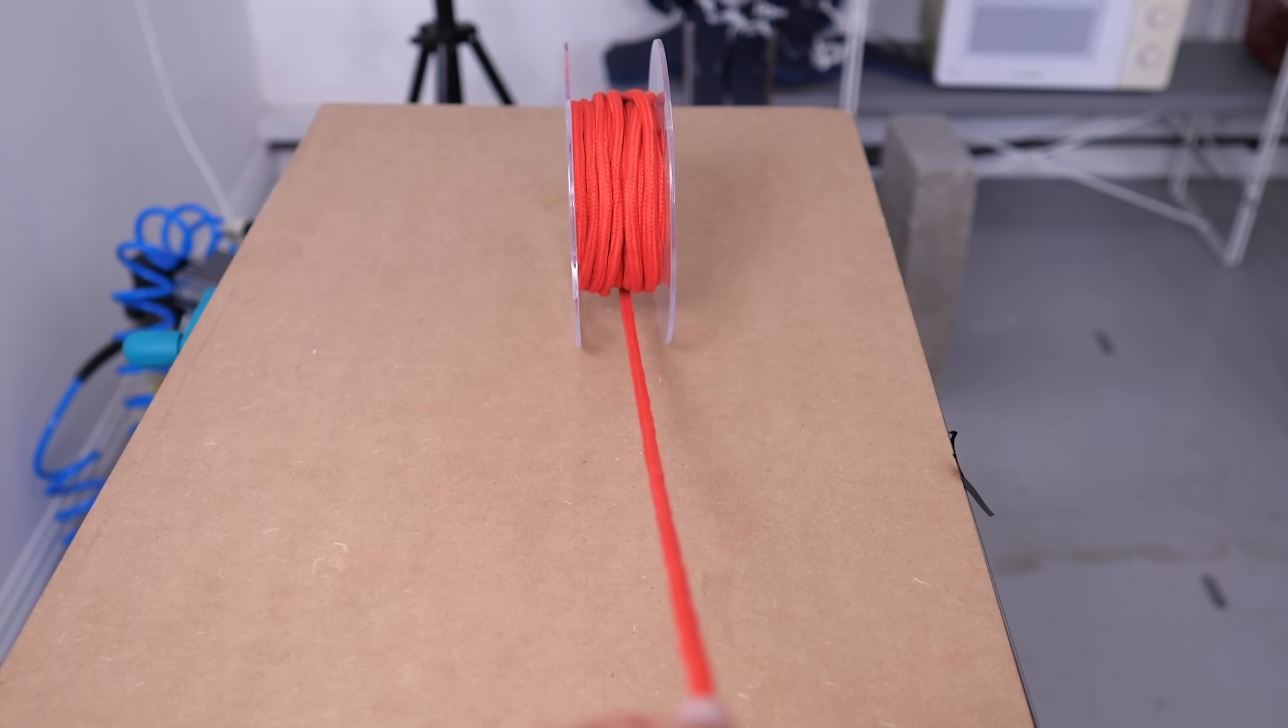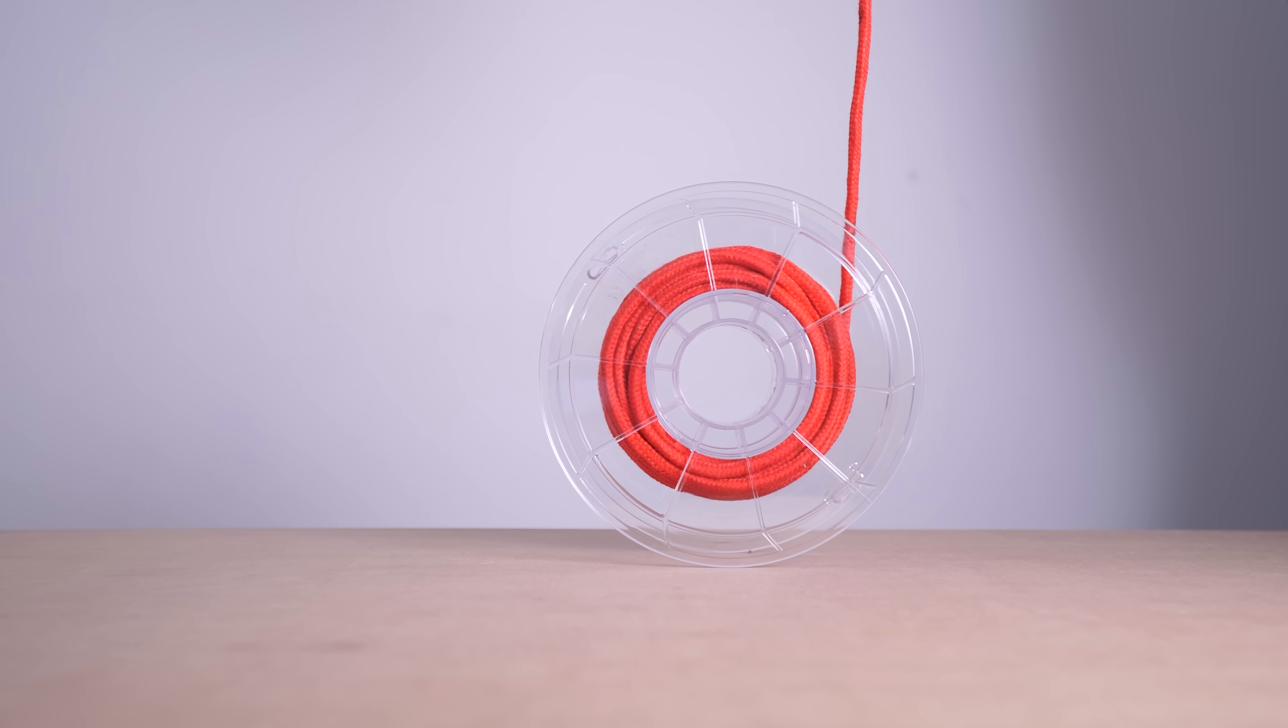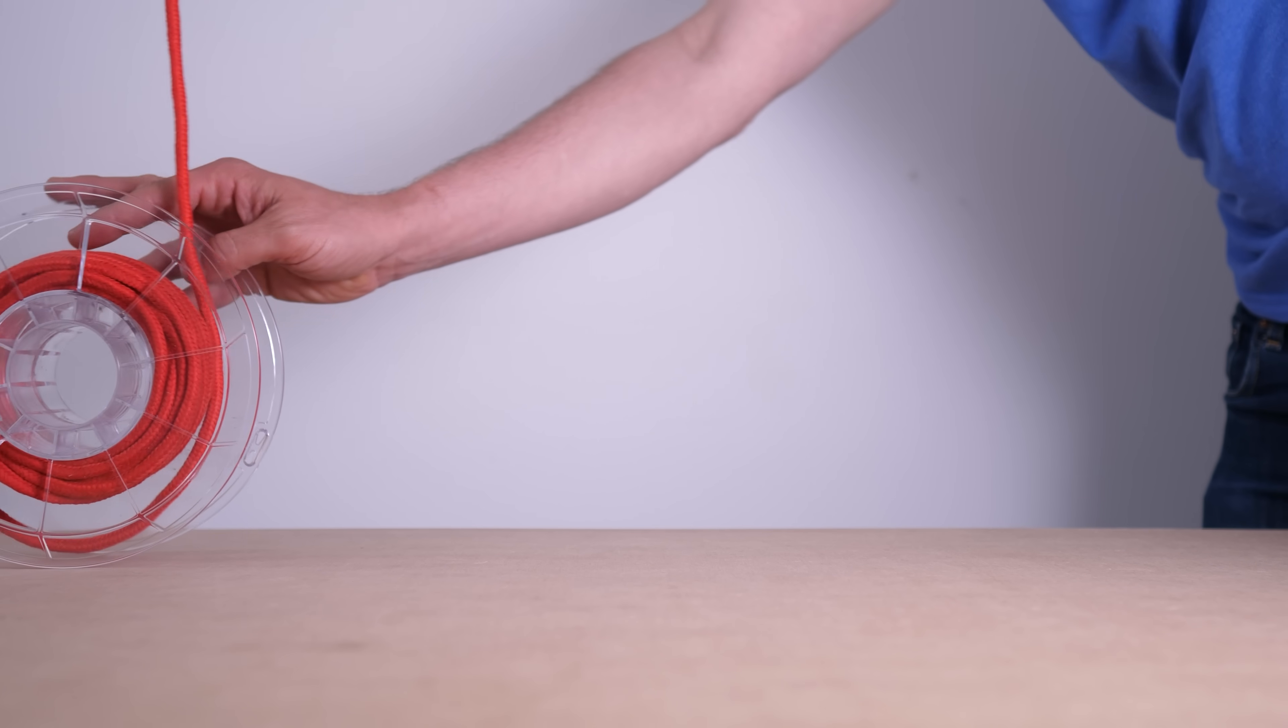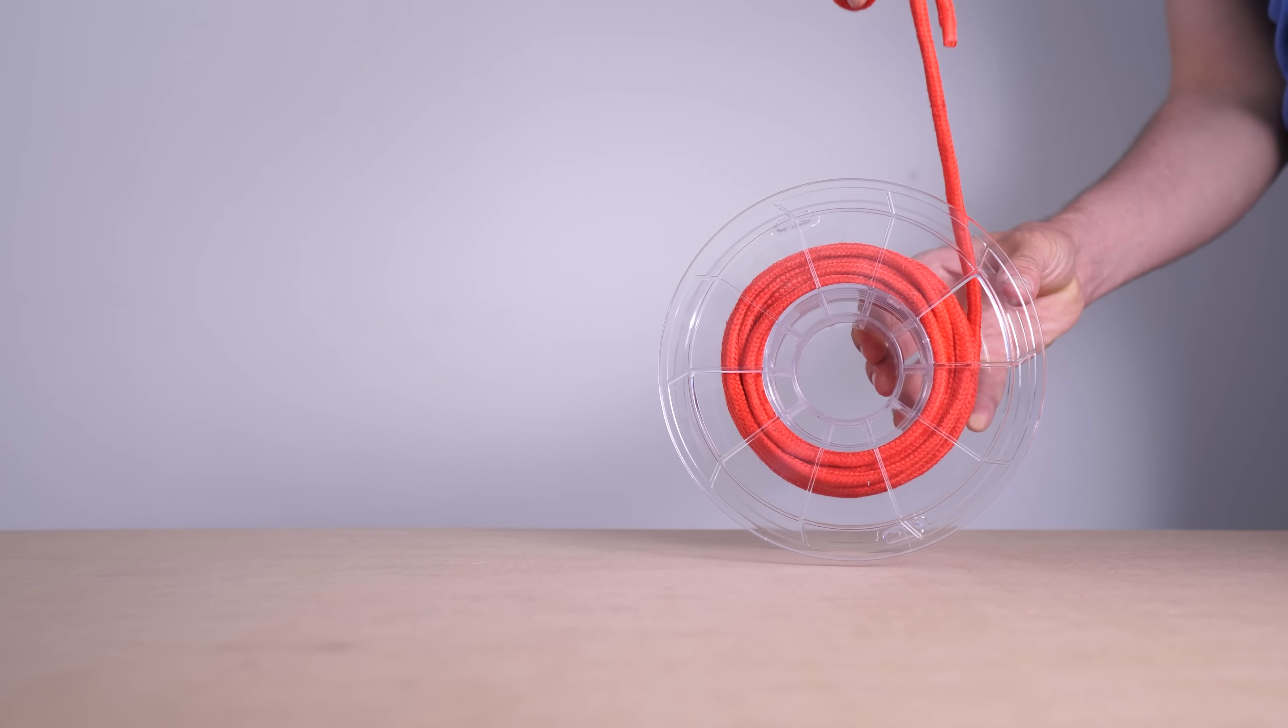By the way, I'm assuming that there is always enough friction between the spool and the table, so the spool always rolls instead of slipping. Interestingly, if I pull the rope upwards, then the opposite happens. The rope gets longer as the spool rolls away from me.